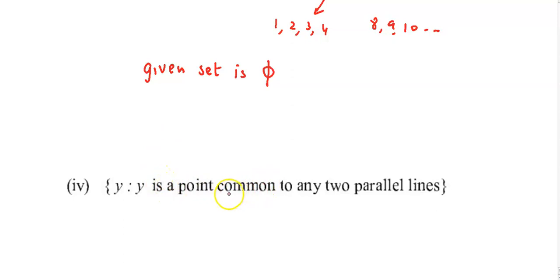y is a point common to any two parallel lines. If we draw two parallel lines, there is no common point between them. Therefore, we can say the given set is a null set.